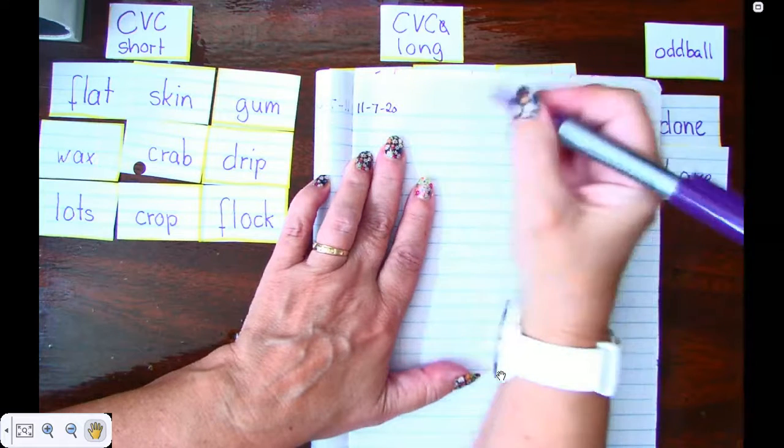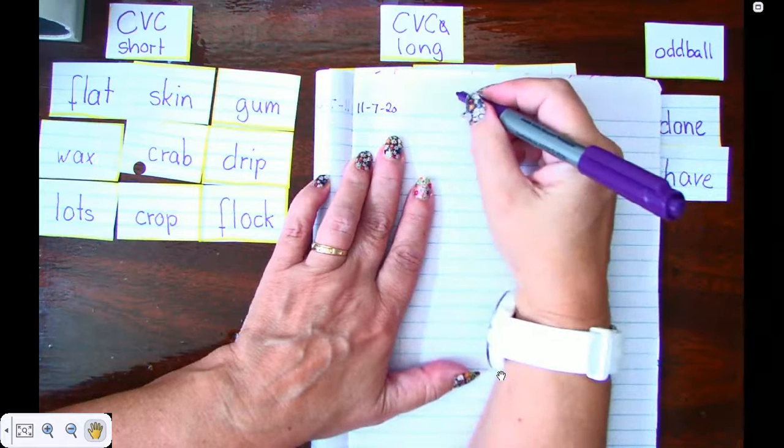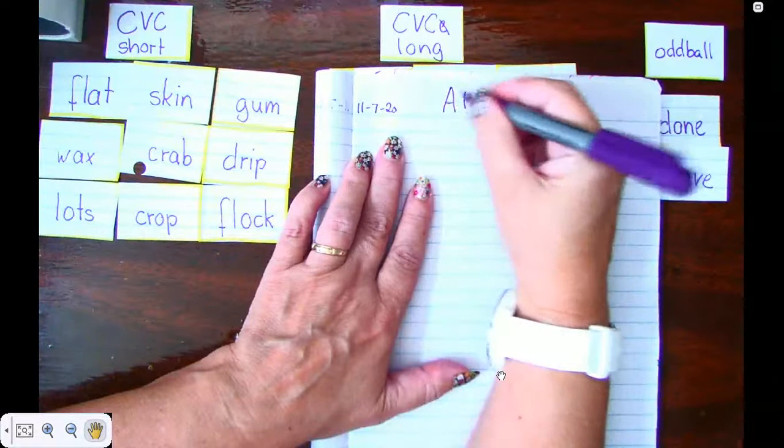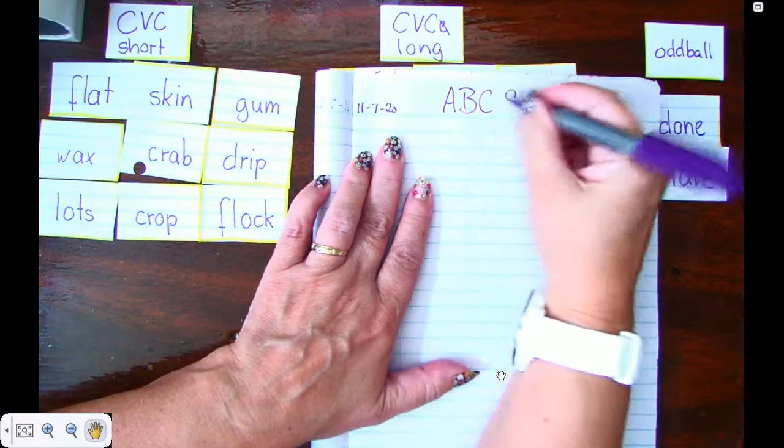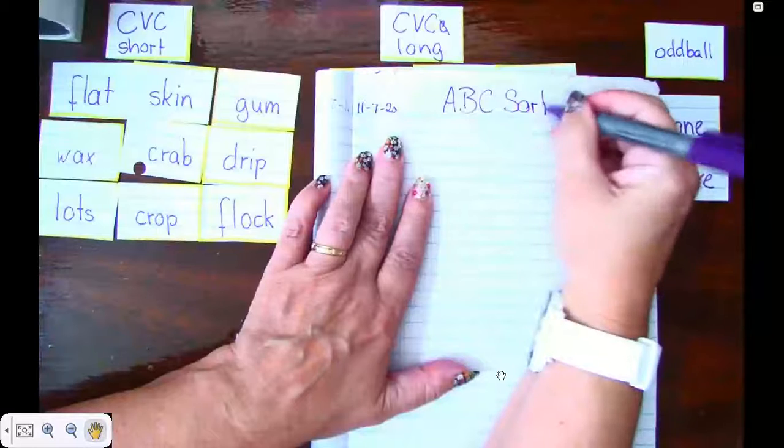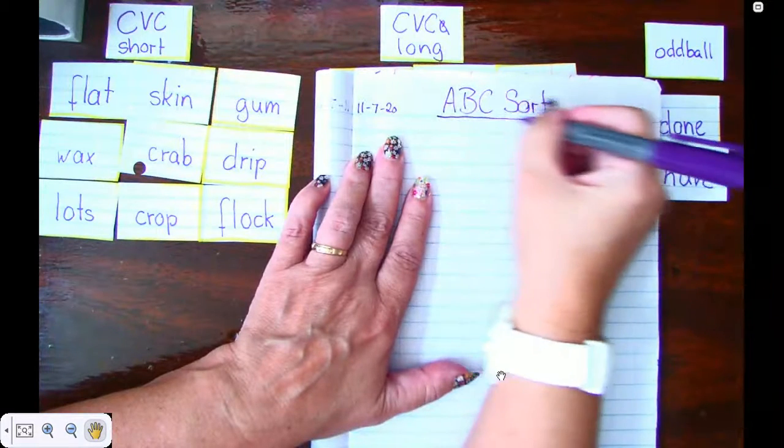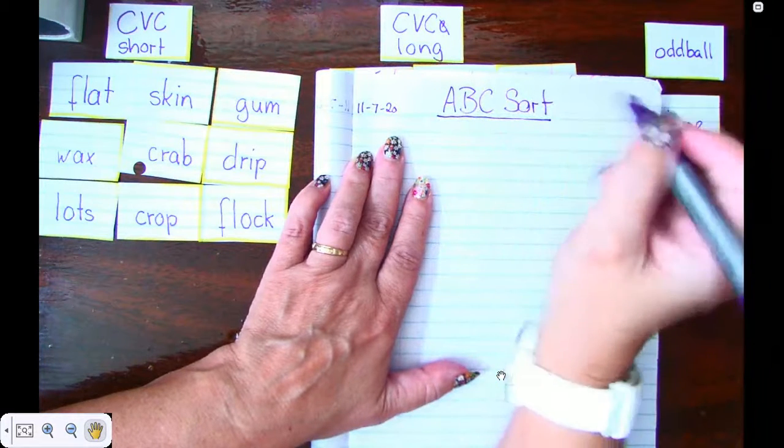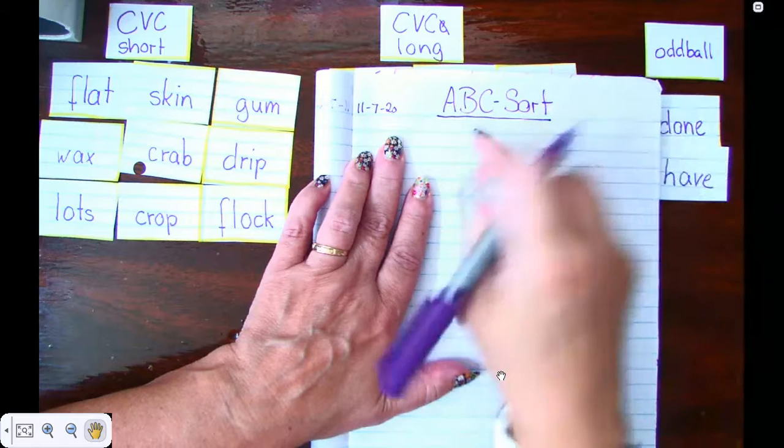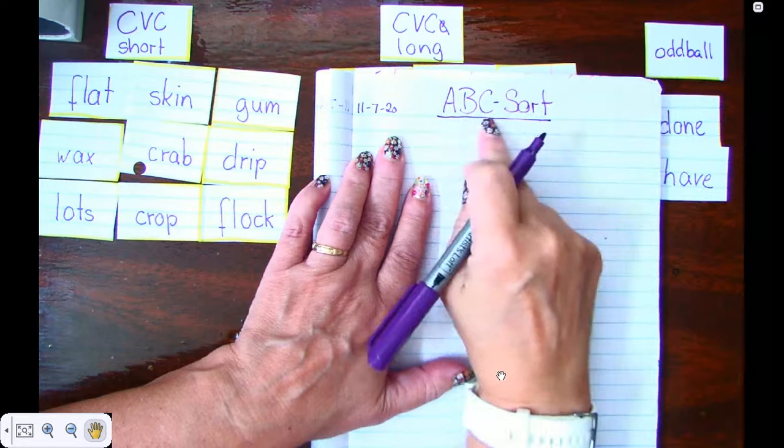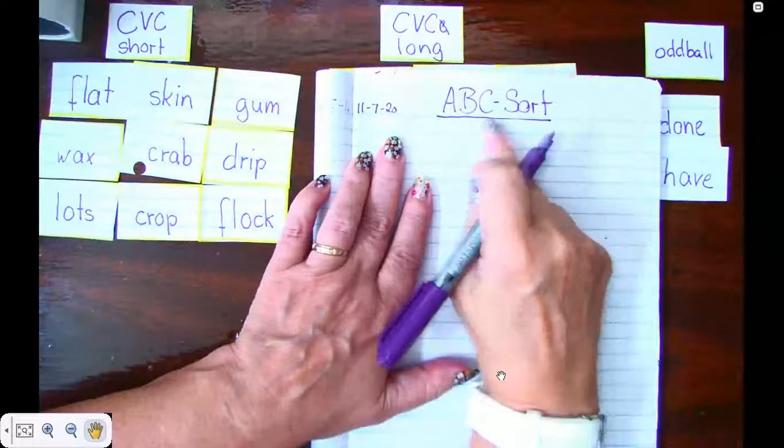And this is our ABC sort. Remember that the words in the title are capitalized and they are also underlined, and ABC is an abbreviation so all of them are capitalized and the word sort is capitalized.